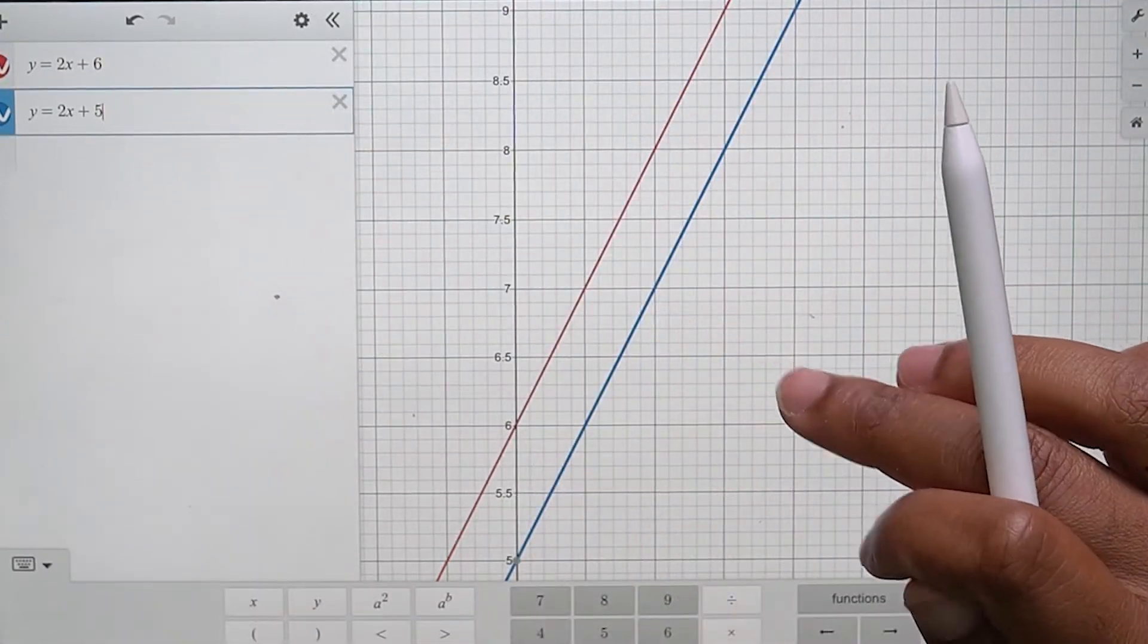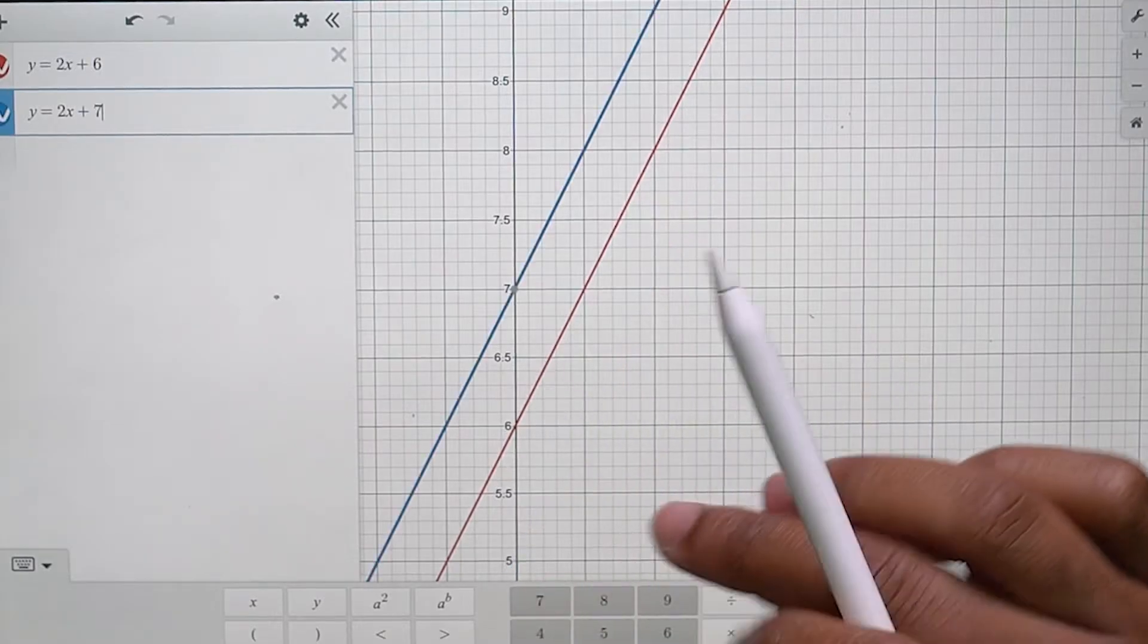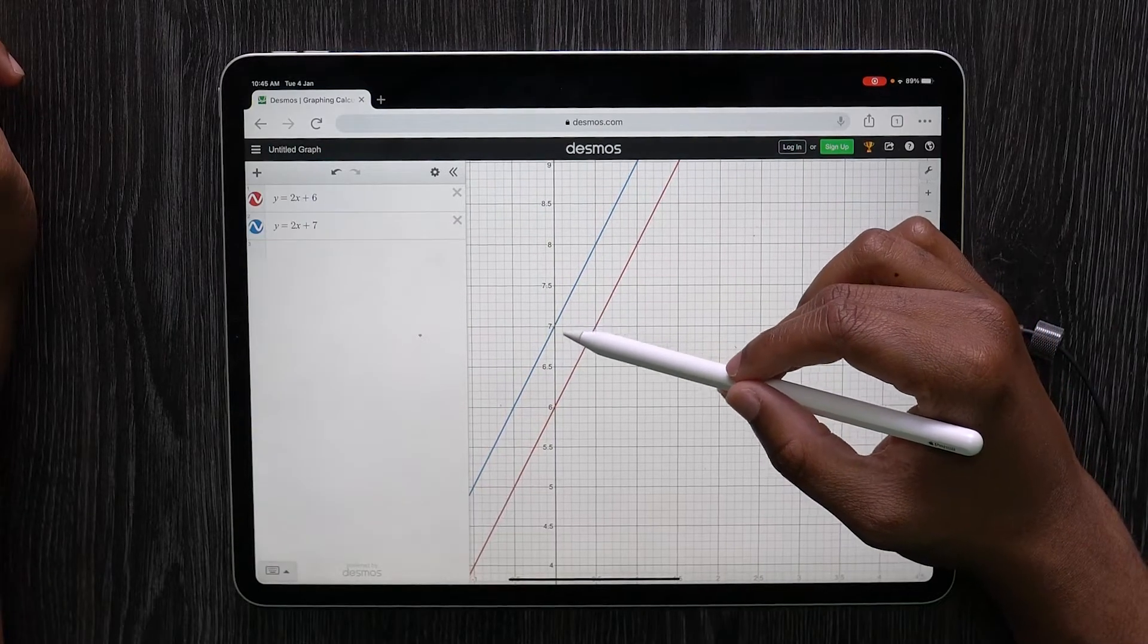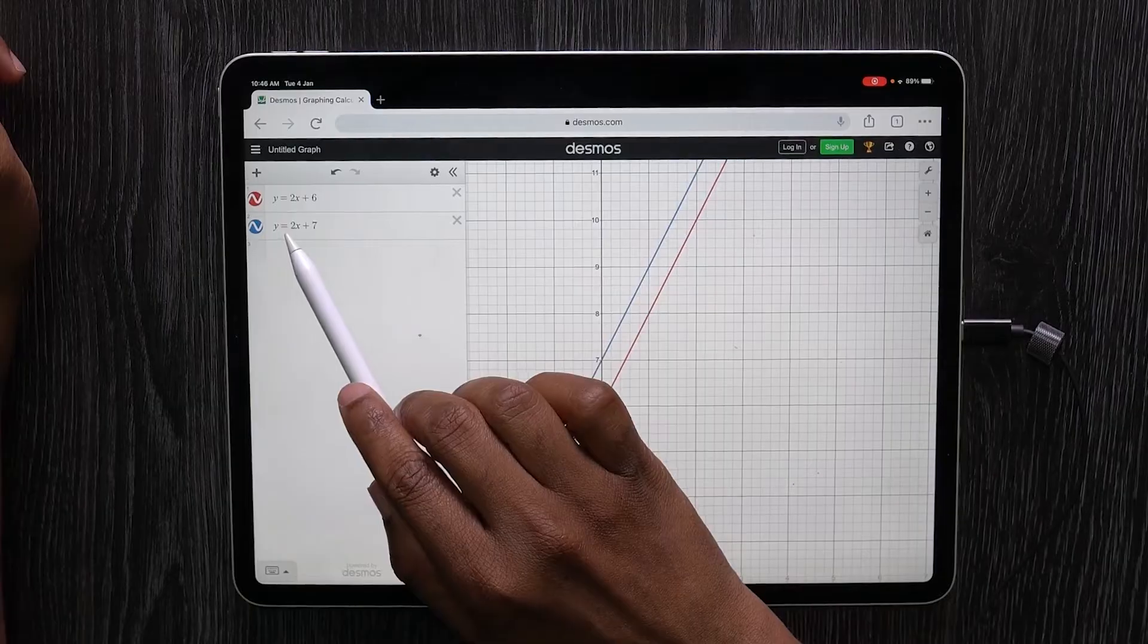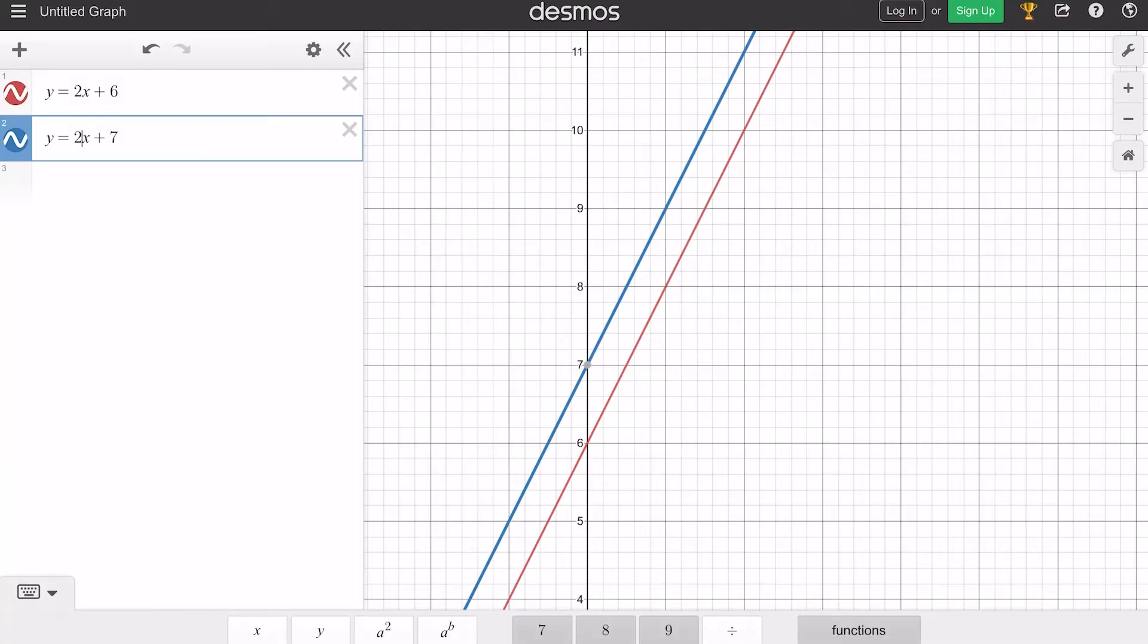What about if I change the blue one to 7? Sure enough, it jumps up there. So what does this number in front of the x control? Maybe if I change this to 6, both of the lines are on top of each other.